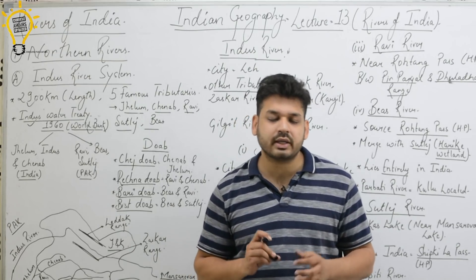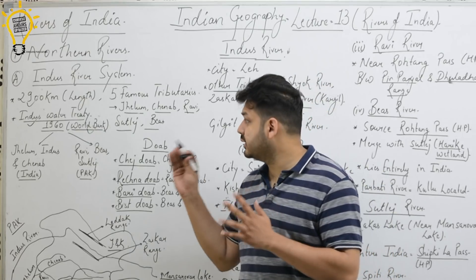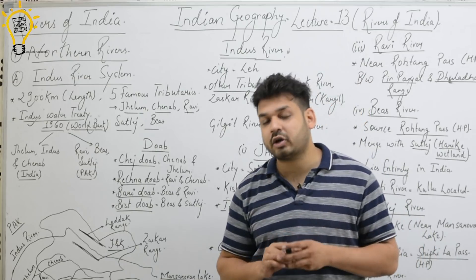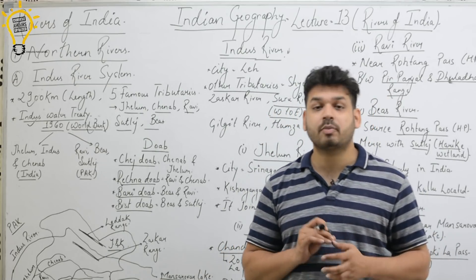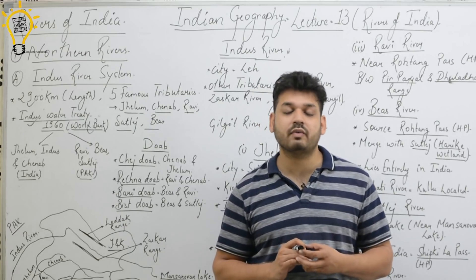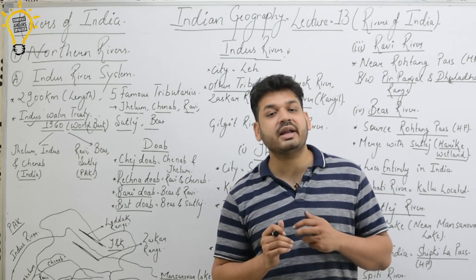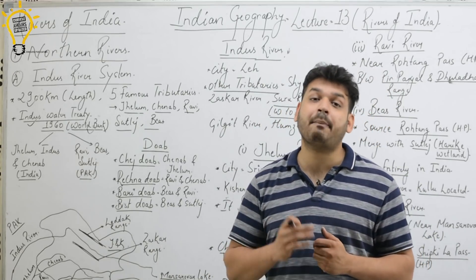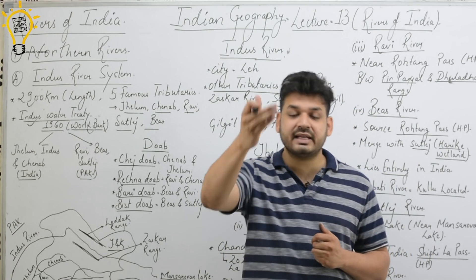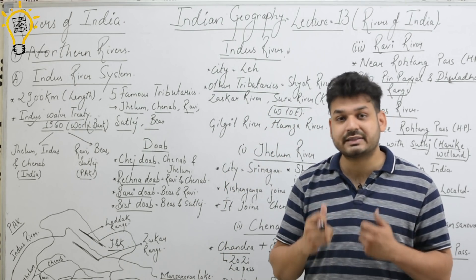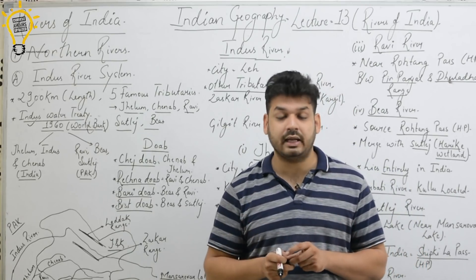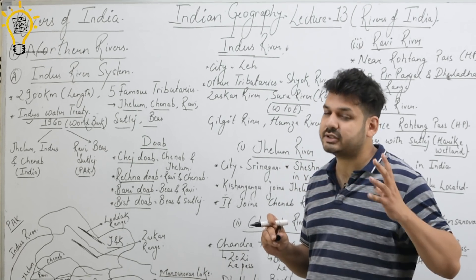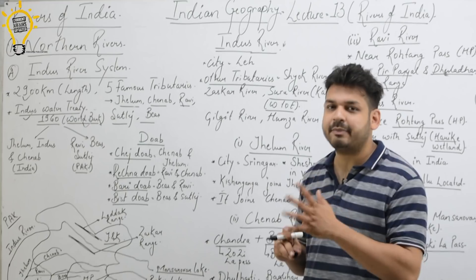An important point about the Indus Water Treaty: if we consider the Indus and its 5 tributaries as having 100% water, then volume-wise, 80% of the water goes to Pakistan and 20% goes to India. So Pakistan gets a larger volume share under this treaty.